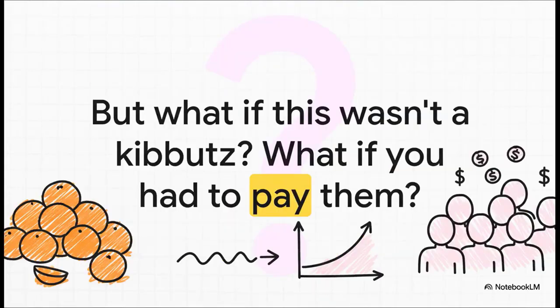This brings us to a final, pretty provocative question. Our orange grove problem was simple because the only goal was to maximize oranges. But what if this wasn't a kibbutz? What if you had to pay each worker a salary? Suddenly, that sixth worker who only added one orange might not be worth it. That changes everything, doesn't it? Something to think about for next time.